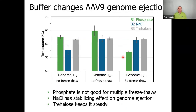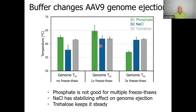A very different picture emerges for AAV9. Using the same temperature scale as AAV5, you can see temperatures are all a little lower, and there is higher variability. For the phosphate condition in green, one freeze-thaw cycle shows some variability with wider error bars, and there is a significant decrease in genome ejection temperature with three freeze-thaw cycles — so if you need to freeze more than once, phosphate is not the buffer of choice. Sodium chloride actually has a stabilizing effect, increasing the genome ejection temperature after one or three freeze-thaw cycles. And trehalose, as before, keeps things stable — the genome ejection temperature does not vary across freeze-thaw conditions.